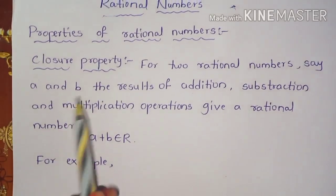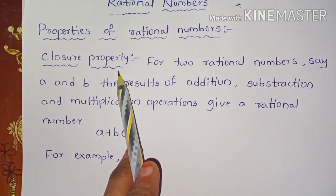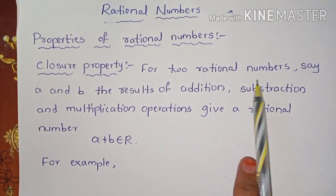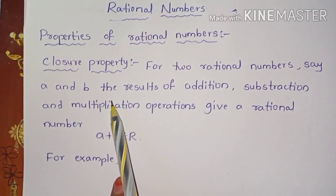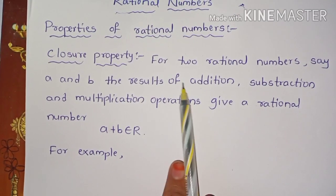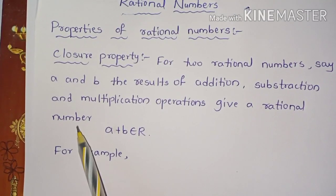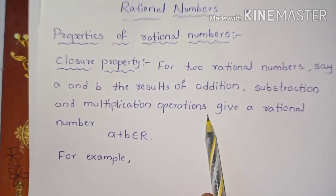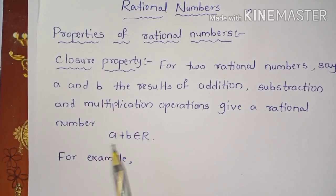First property: closure property. For two rational numbers A and B, the results of addition, subtraction, and multiplication operations give a rational number.